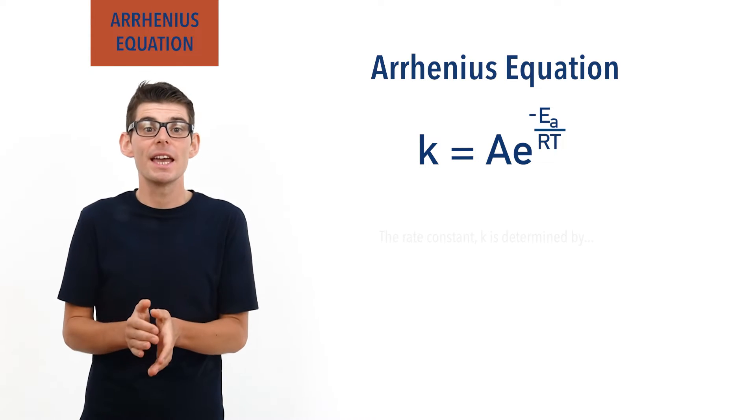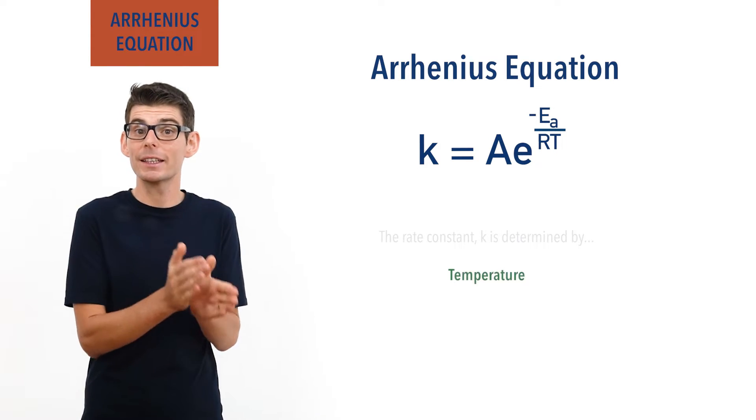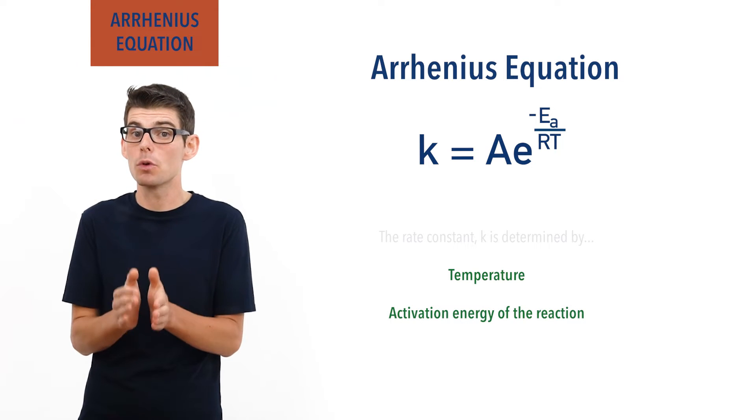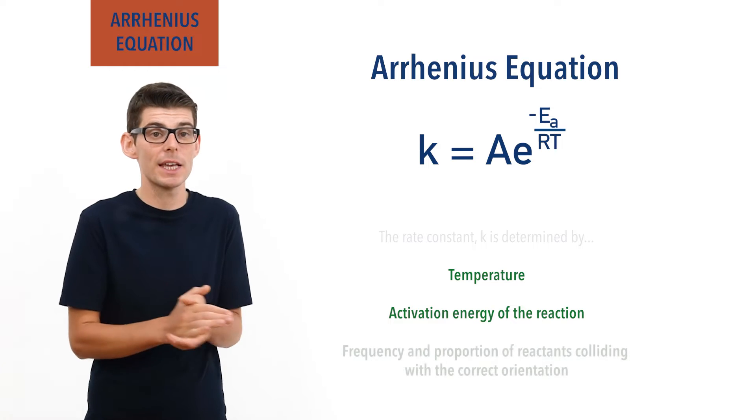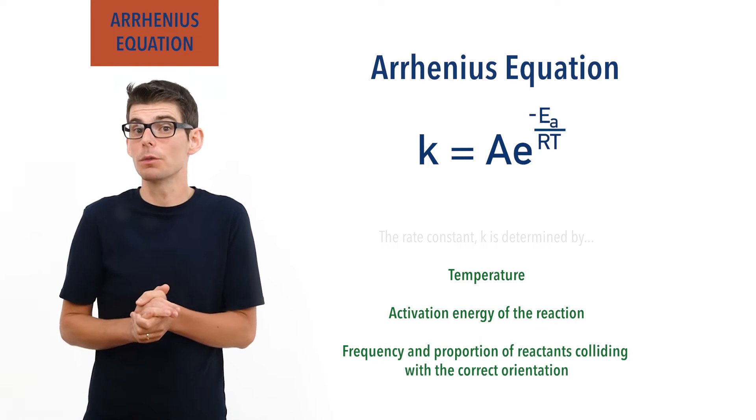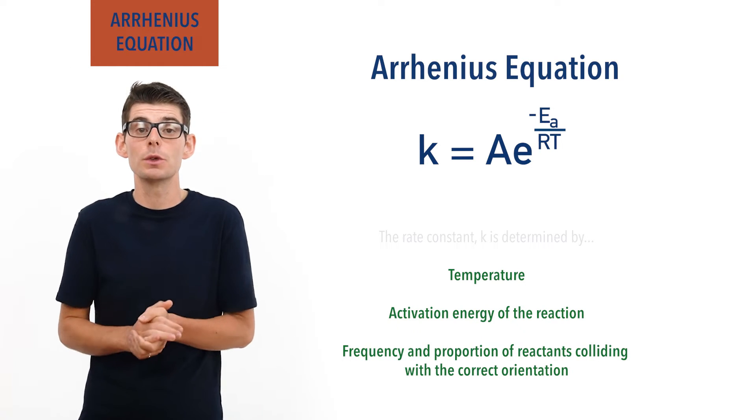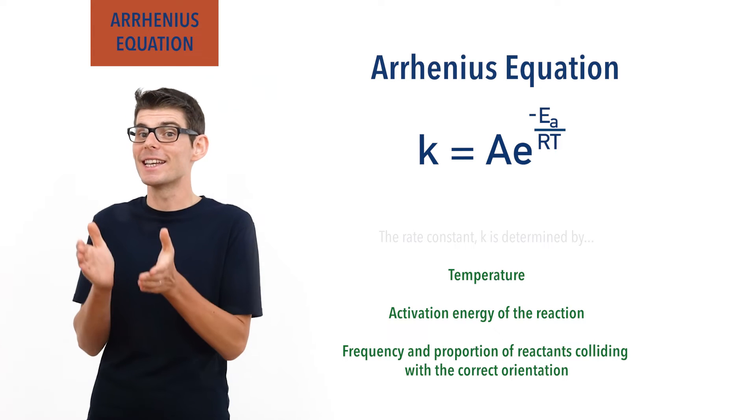The rate constant k is based on the temperature, activation energy, and the proportion or frequency of collisions occurring with the correct orientation, meaning the Arrhenius equation must include these things in it, and it does.